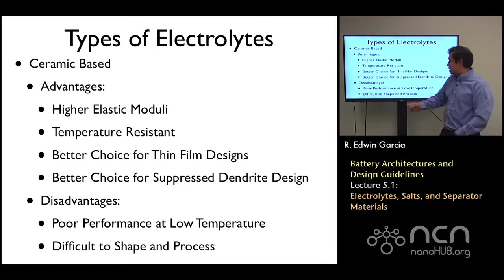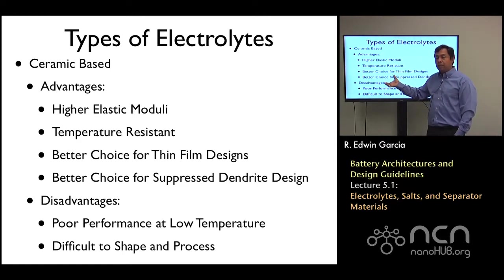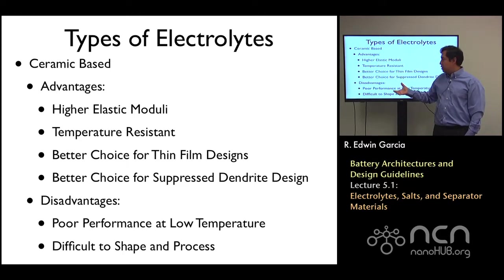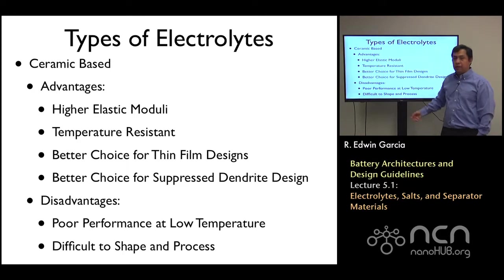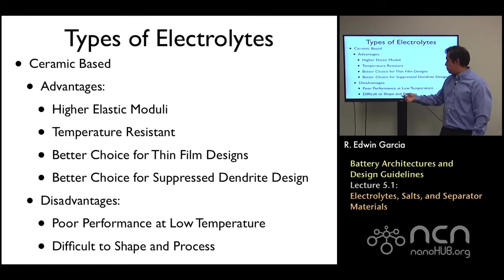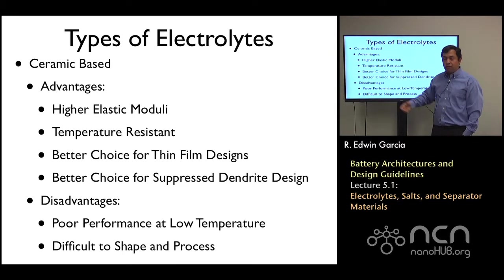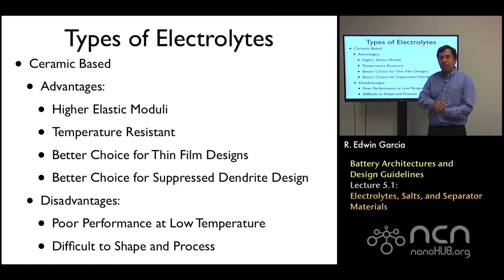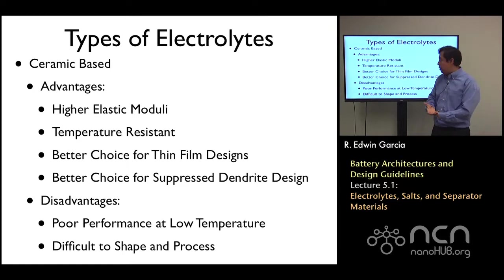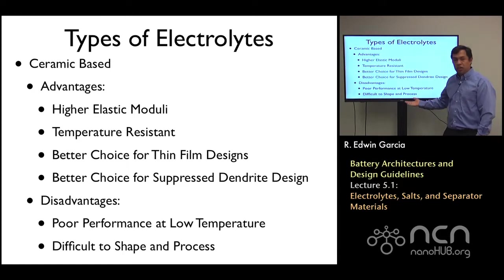The disadvantages are that if you want to use a high-temperature cell — say, if you were using this in the Mojave Desert and you take it, for example, to winter in Colorado — you will have poor performance because at low temperatures the diffusivity of the systems becomes low, so you get very low power. Also, because they're so stiff — think of them as ceramic crackers that you want to wrap around a cylinder-like structure — if you try to do that, you can see how difficult it could be. So shaping becomes very challenging.